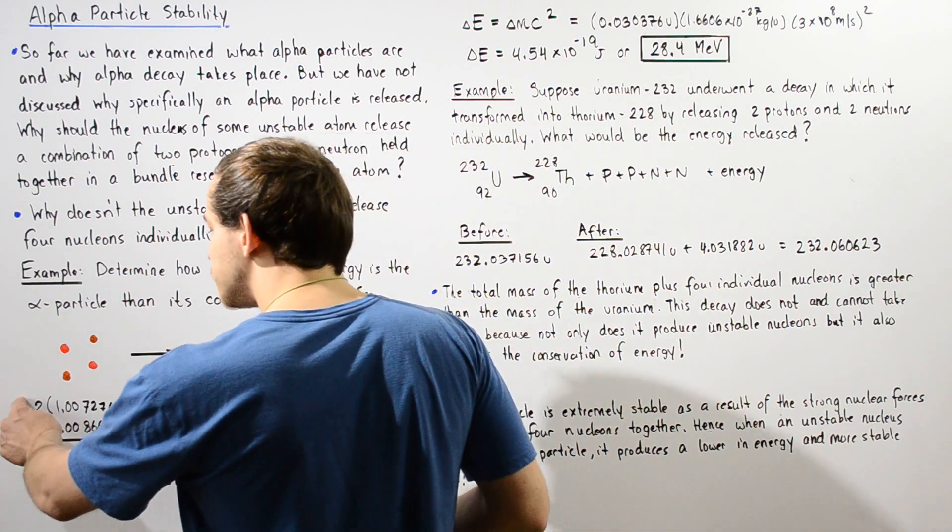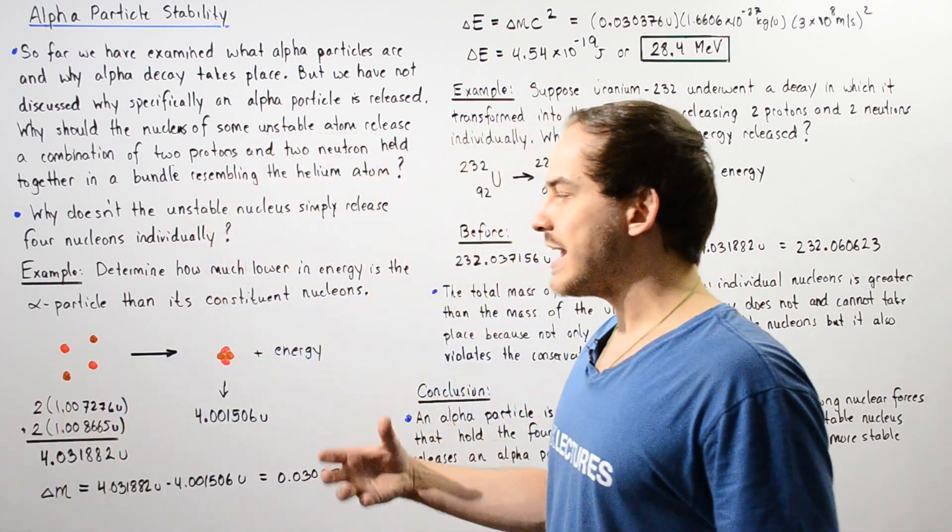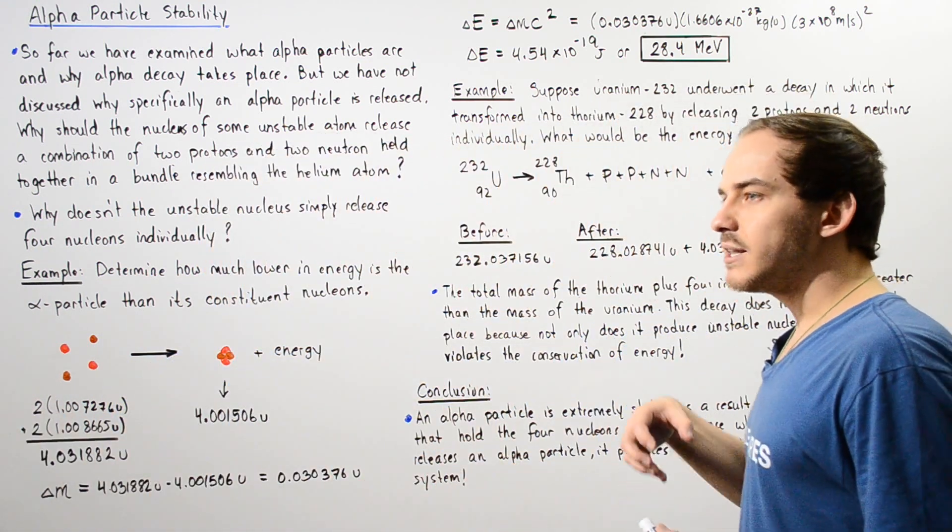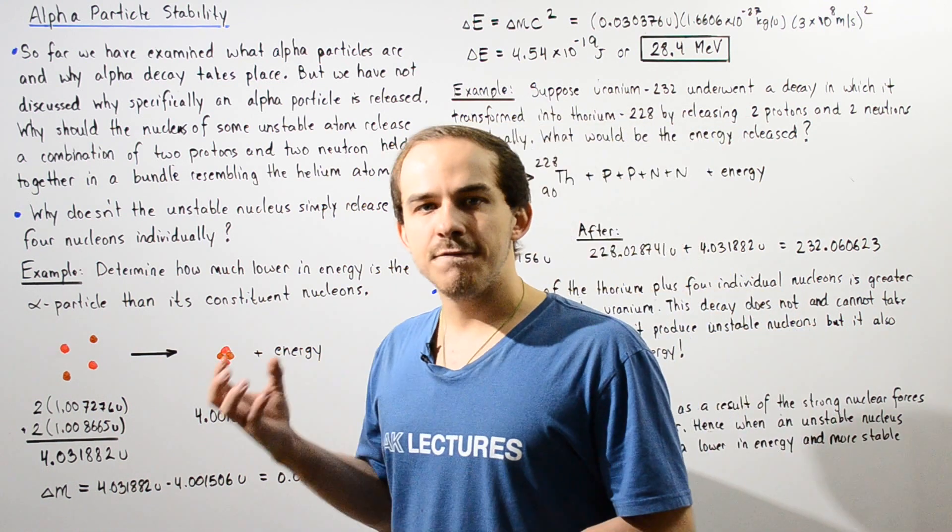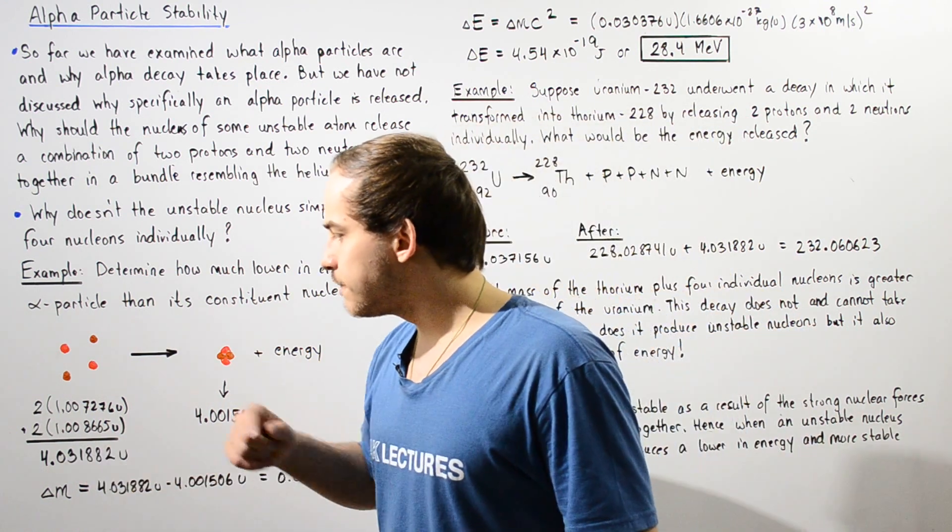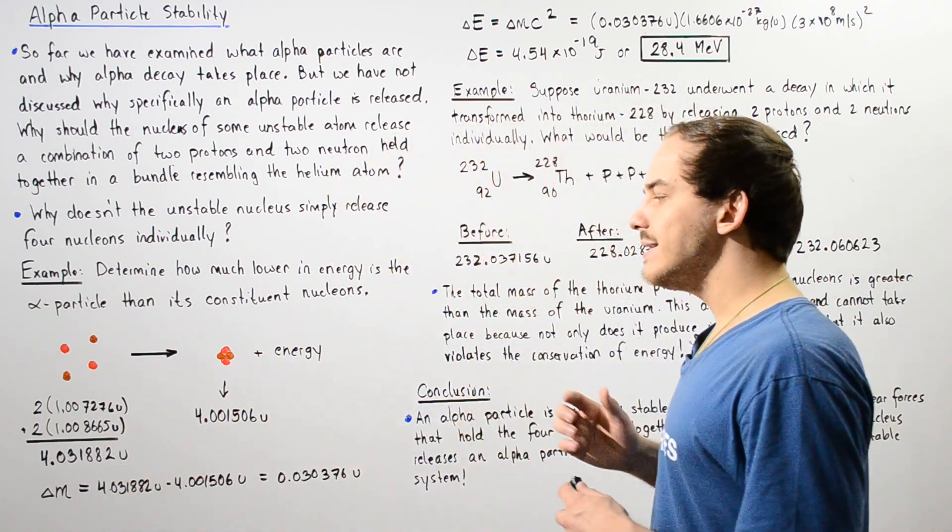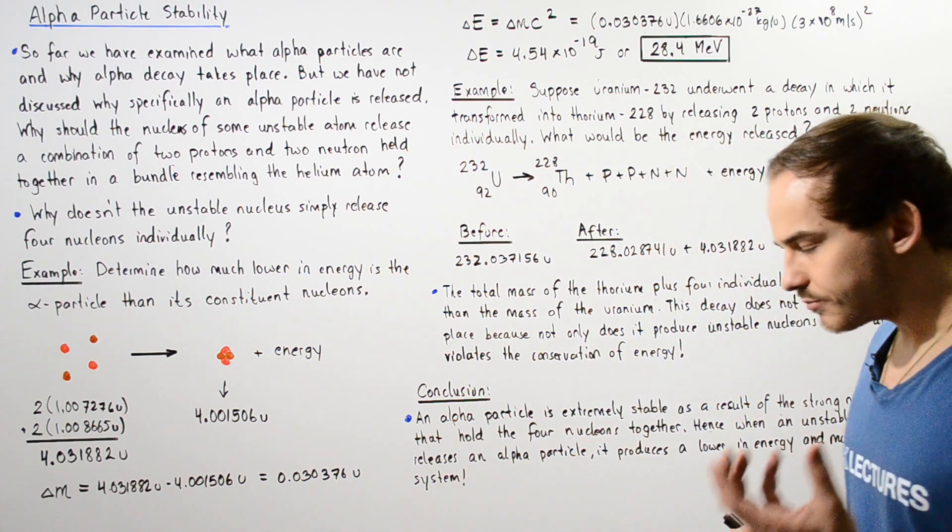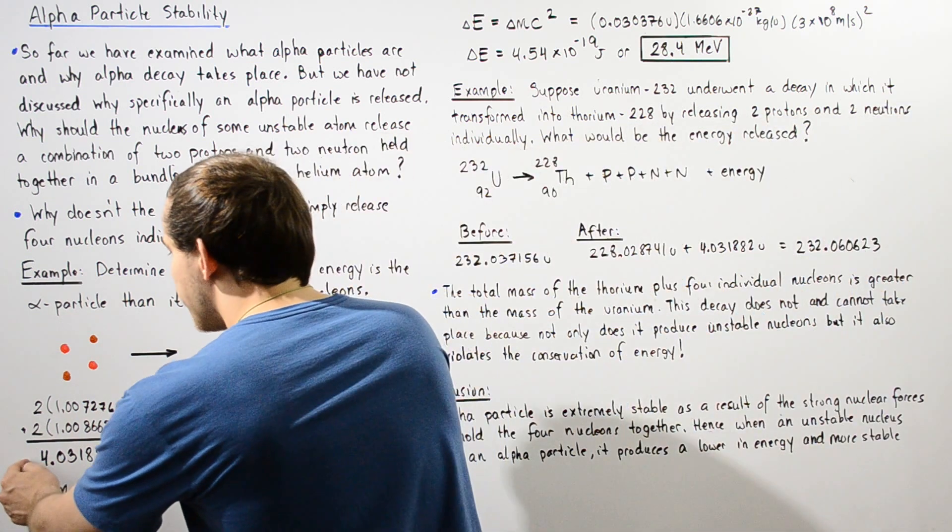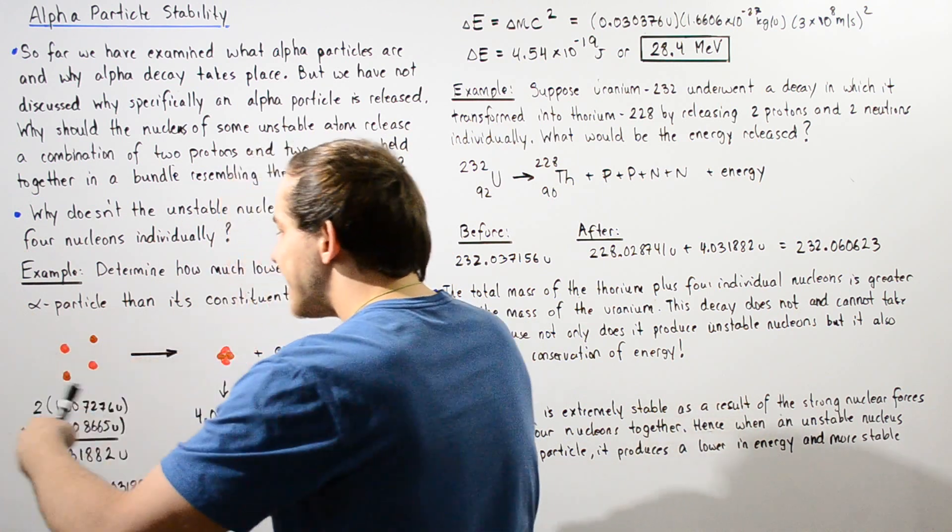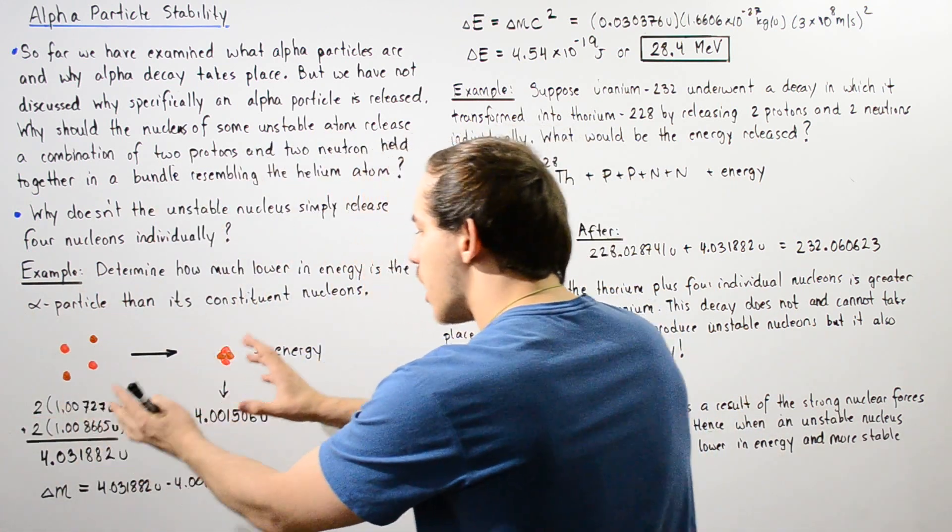So basically we multiply each by two and we take the sum and we get that the mass of four individual nucleons is 4.031882U. So notice that the mass of the reactants is greater than the mass of the products.